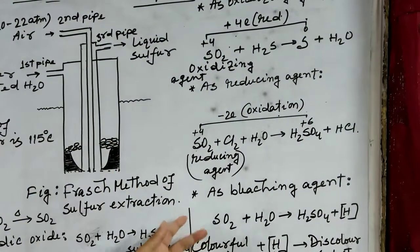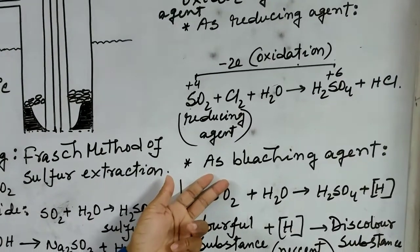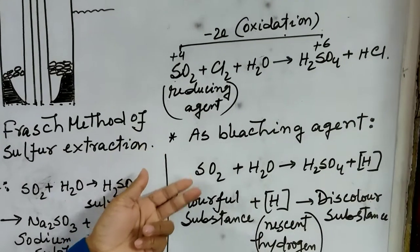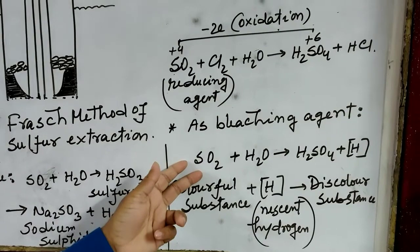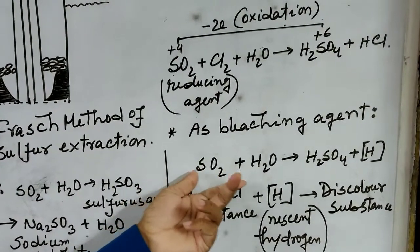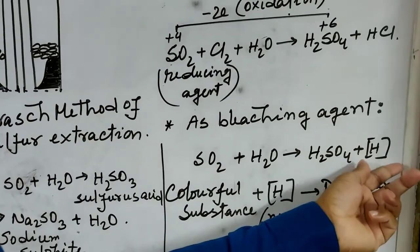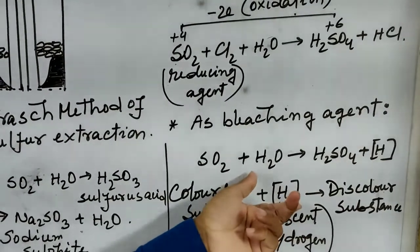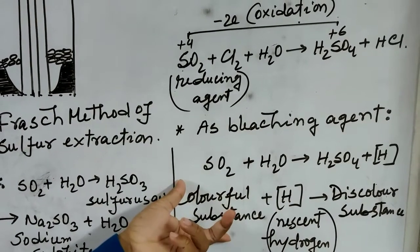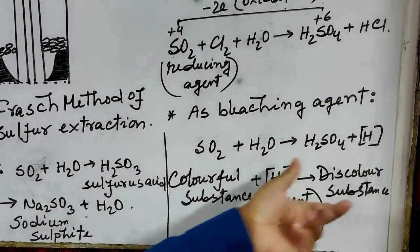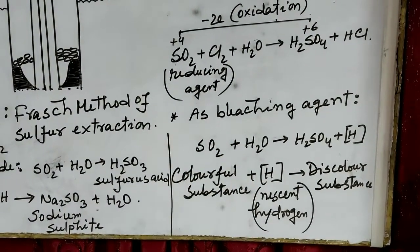Sulphur dioxide is also a bleaching agent. The substances which discolour a colourful substance are known as bleaching agents. Sulphur dioxide is a bleaching agent because it reacts with water to produce nascent hydrogen. Nascent hydrogen reduces colourful substances and makes them discoloured. That's why sulphur dioxide is also a reducing agent.